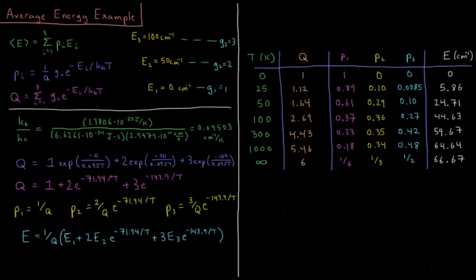So if we substitute in these values of 0, 50, and 100 wavenumbers and various temperatures, we'll get various expressions for what each of these probabilities in the partition function are and what the energy of the system is at that temperature.